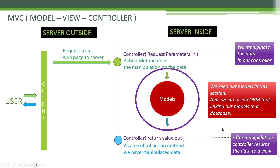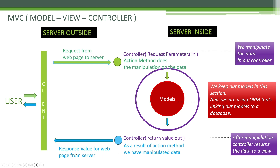After manipulation, the controller returns the data to a view — the controller sends the data to the view, and the view is the page which is seen by the user. So to summarize: we send the request, the request goes to the controller, the controller defines which action method will manipulate the data, and the controller sends the data back to the user. This is how MVC works.